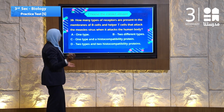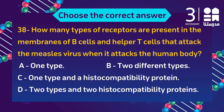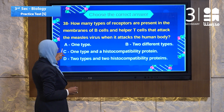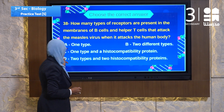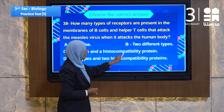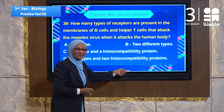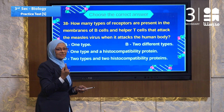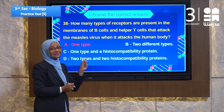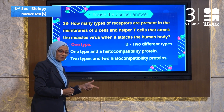Question 38 is about immunity. How many types of receptors are present in the membranes of B cells and helper T cells that attack the measles virus? Reading the choices: one type, two different types, one type with histocompatibility protein, or two types. Since it is the same virus, the answer is one type — one type of receptor.